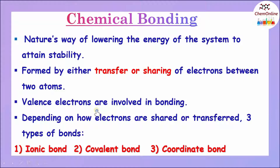Valence electrons means the electrons that are present in the outermost shell. So, depending on how the electrons are shared or transferred between the atoms, there are three types of chemical bonds: ionic bond, covalent bond, and coordinate covalent bond.